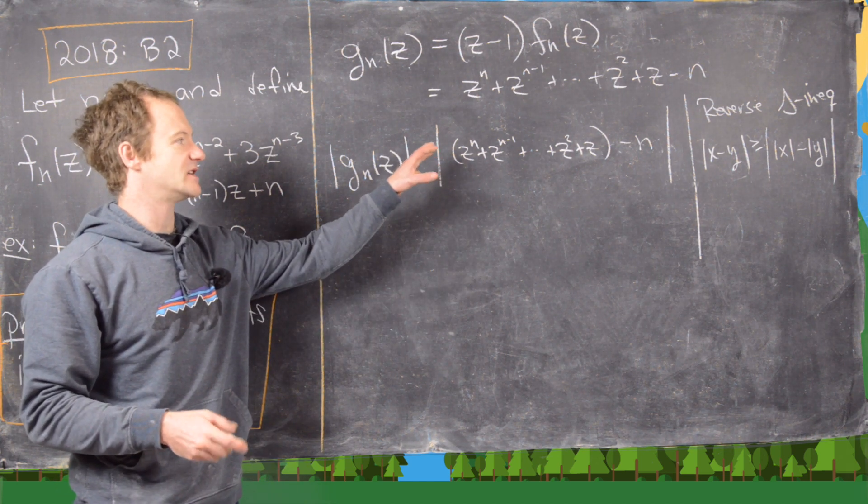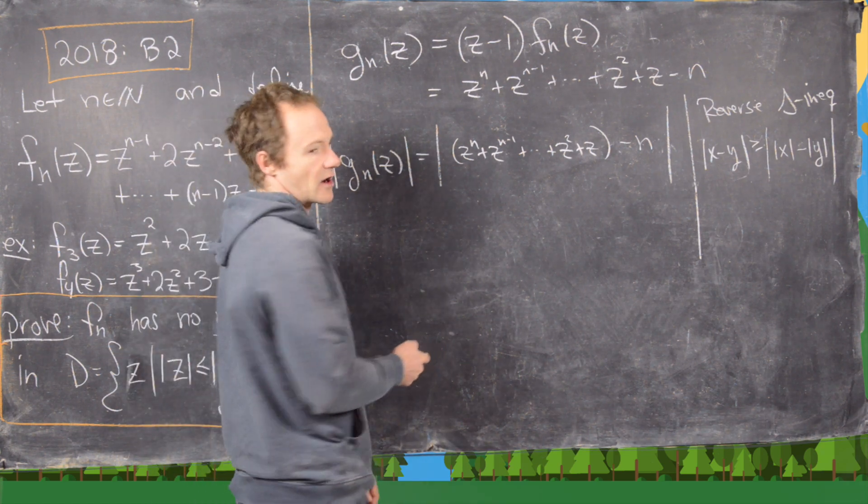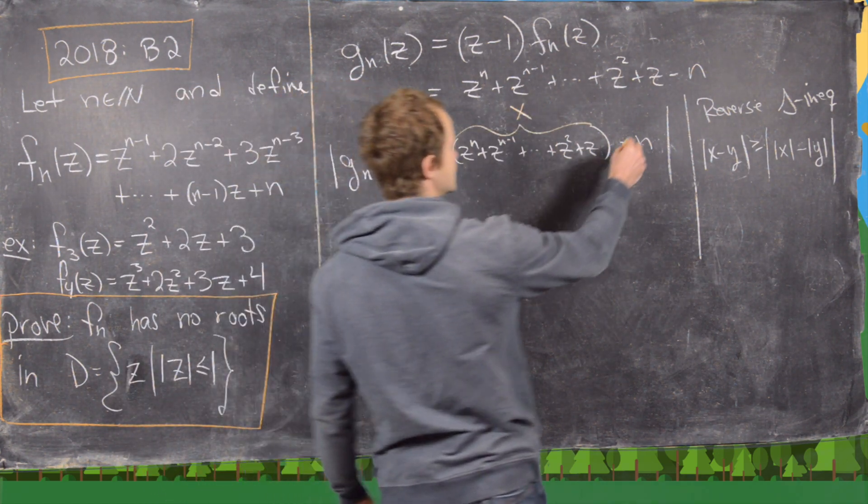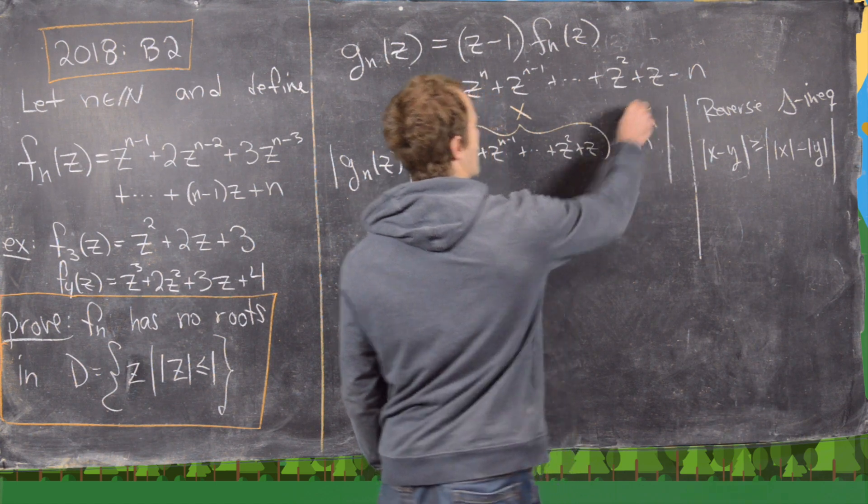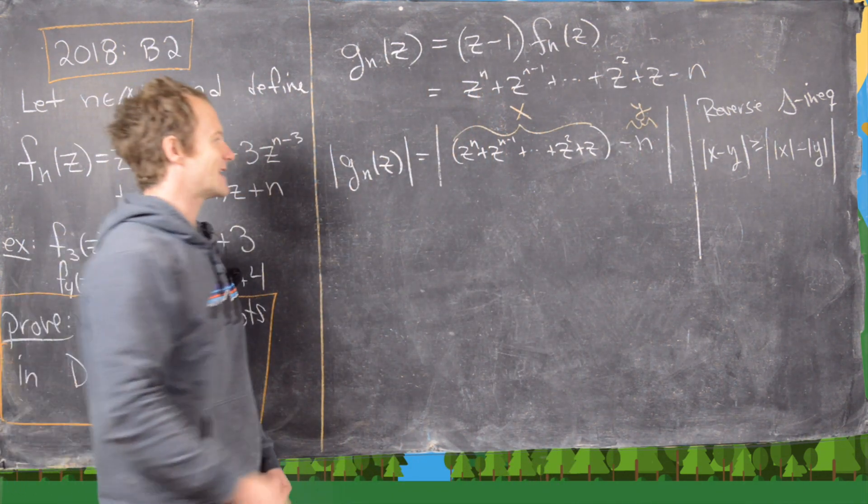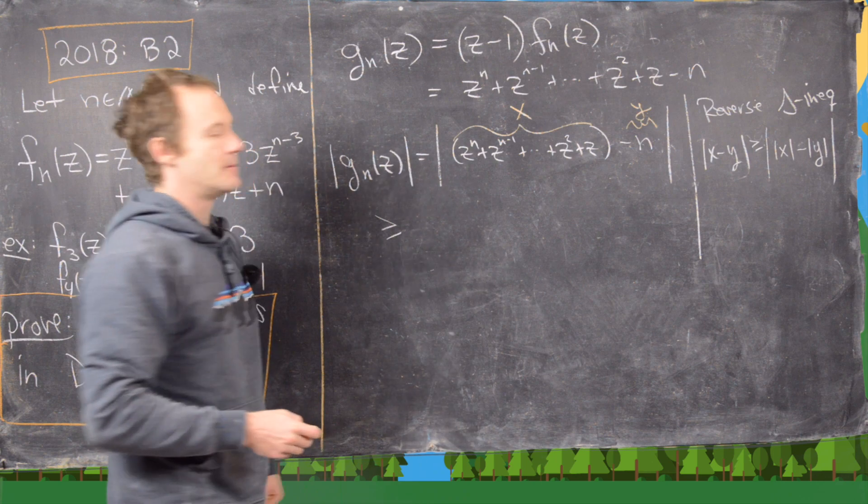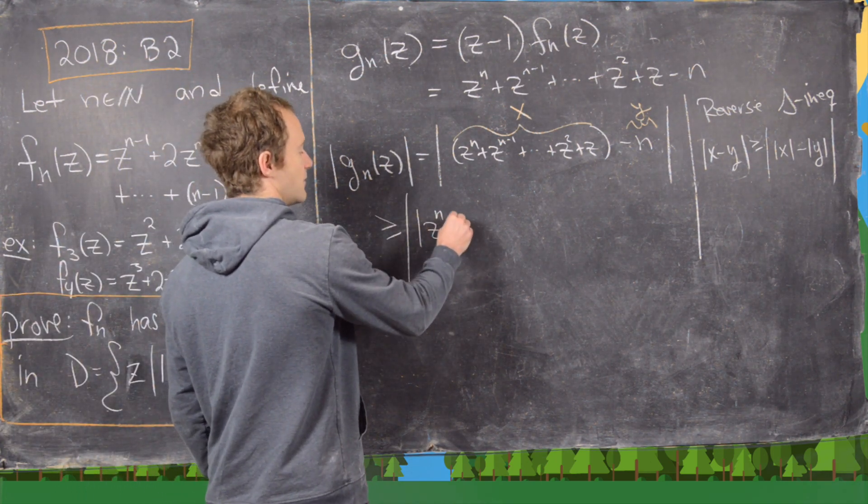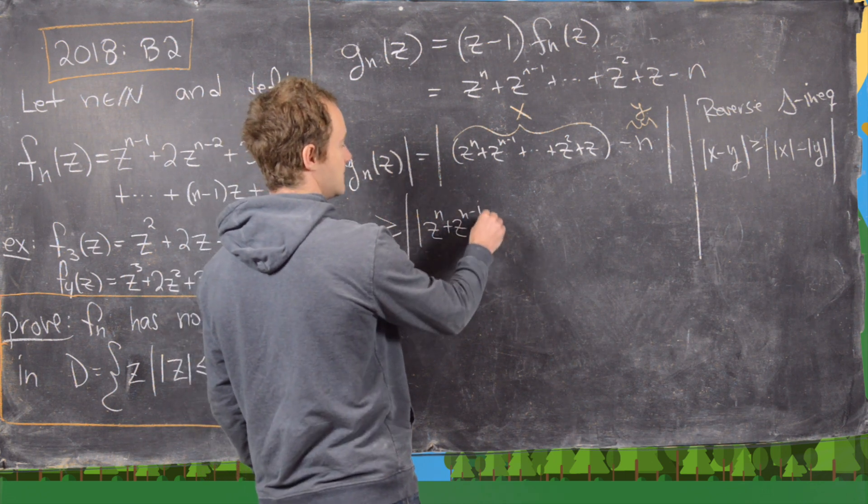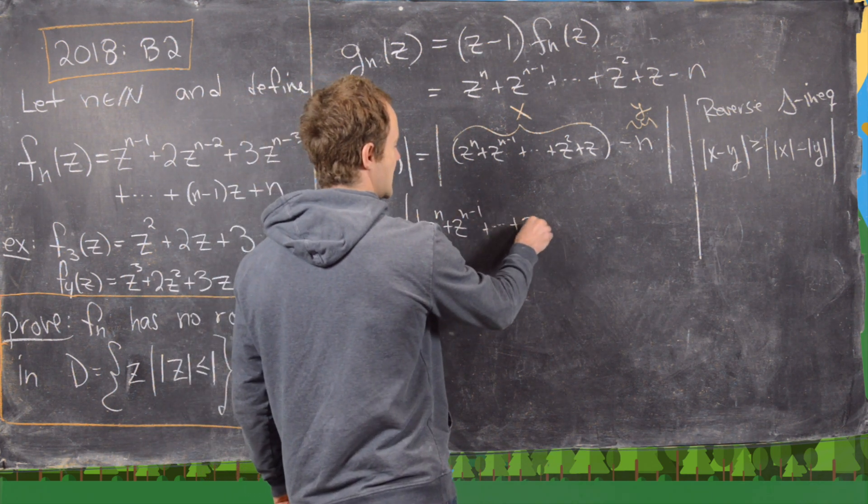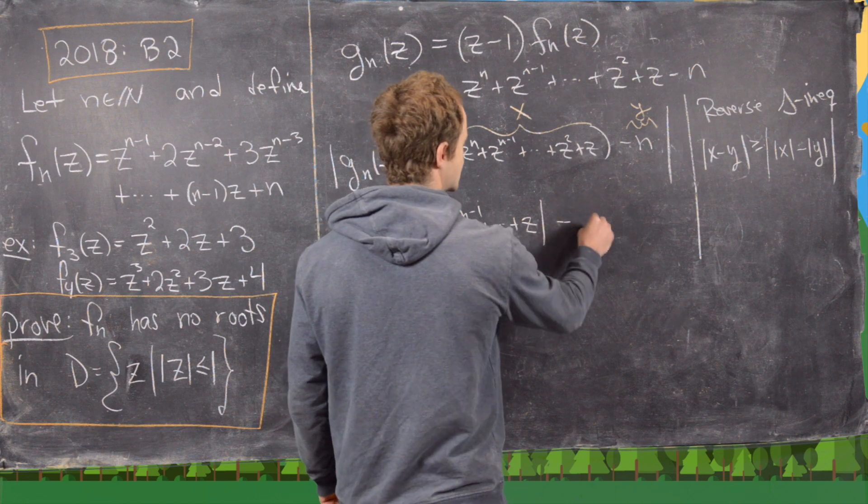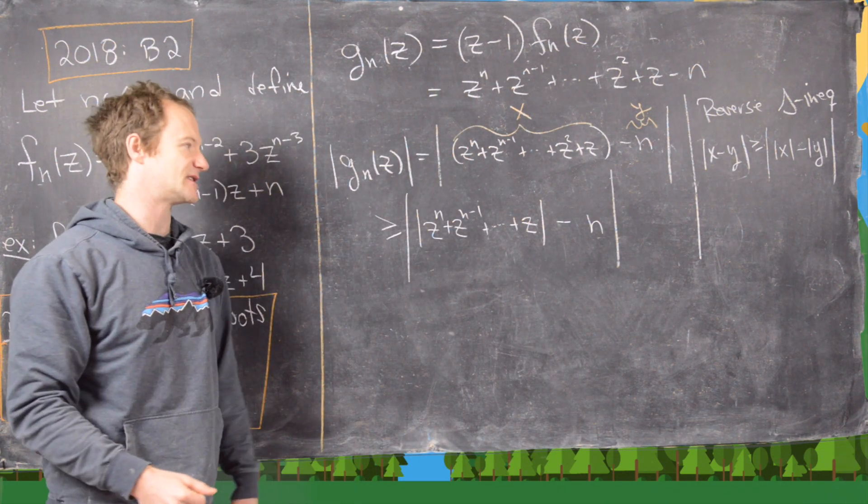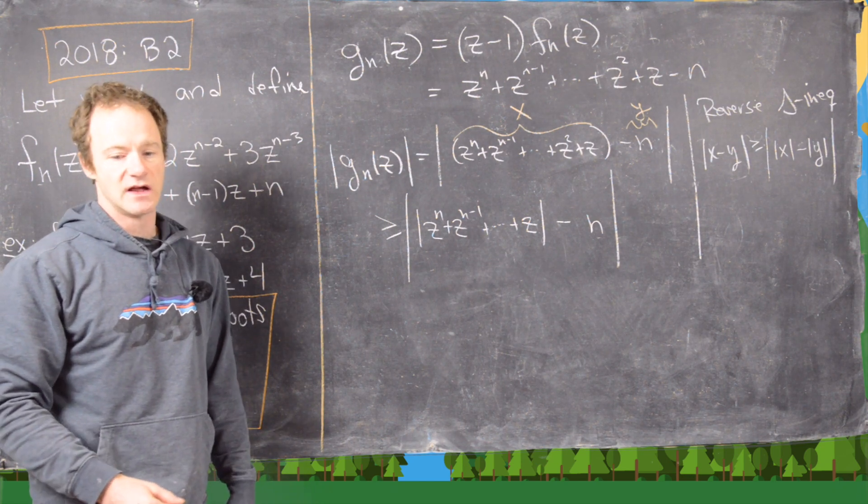We want to apply that to this term right here, where we take this big chunk in the beginning to be x and this to be y. That's going to give us that this is bigger than or equal to the modulus of zn plus zn minus 1 all the way down to z minus the size of n. But notice the size of n is just n itself, given that's a positive integer.